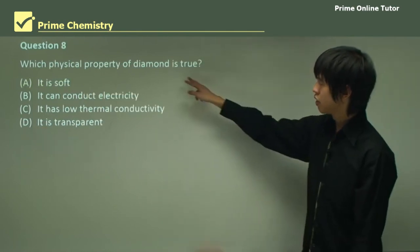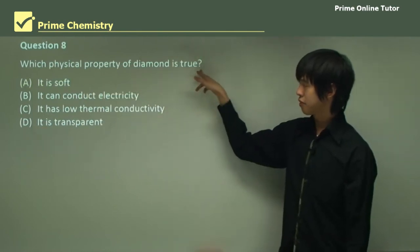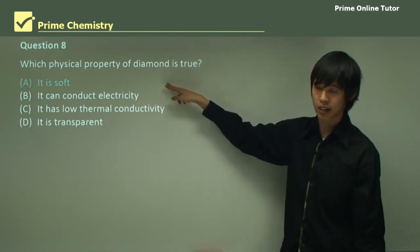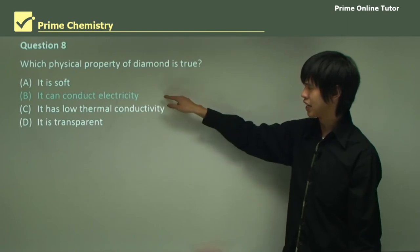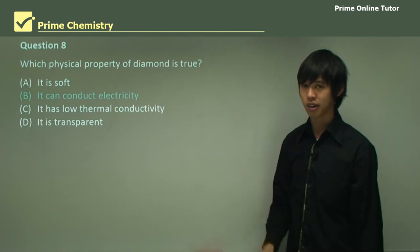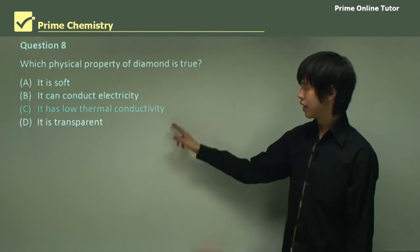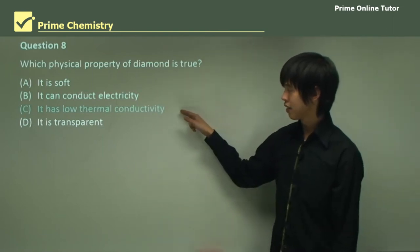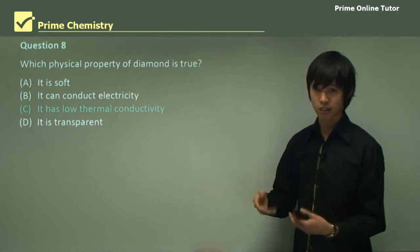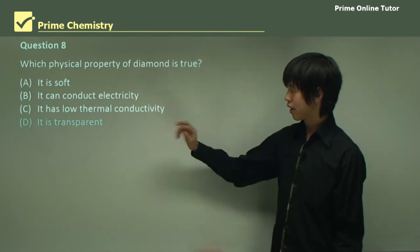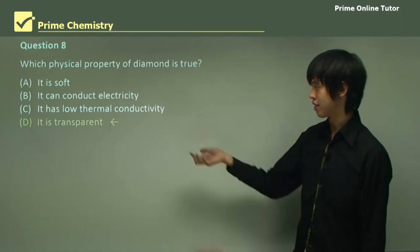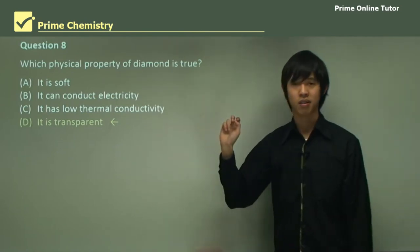Question two, which physical property of diamond is true? It is soft, no, we know it's the hardest substance we can find in nature. It can conduct electricity, again no, because it has no free electrons, so no electrical conductivity. It has a low thermal conductivity, no, it's got a very high thermal conductivity. It allows heat to pass through it very well because of all those bonds. And it is transparent, and yes it is transparent because we can see through it, and so this is the physical property of diamond which is true.